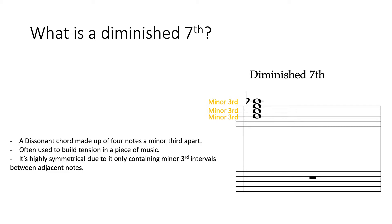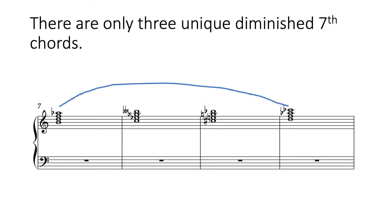So that's broadly speaking what it is. It's important to also note that because it's really symmetrical, there are only three unique diminished 7th chords. The first one contained B natural, D, F, and A flat. And the last diminished 7th chord noted there contains D, F, A flat, and C flat — which is the same as a B. So there are only three unique diminished 7th chords.